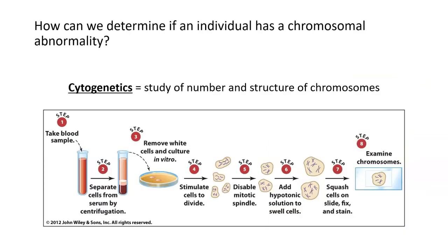These syndromes — Down syndrome, Cri-du-chat, Angelman's — are all serious but can be lived with in certain cases for a long time. We want to know that an individual has these syndromes so that we can adequately make medical decisions and lifestyle changes to keep that person as happy and healthy as possible. In order to diagnose a chromosomal abnormality, there is an entire field devoted to studying the number of chromosomes as well as their structure, and this field is called cytogenetics.